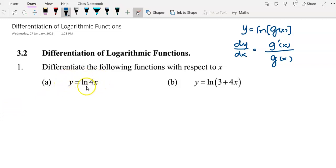So if I have y equals log 4x, let's consider this 4x as our g(x). Then I have my g'(x) as 4. So to get dy/dx, I need to differentiate this 4x to get 4 first, and then divide it by 4x.